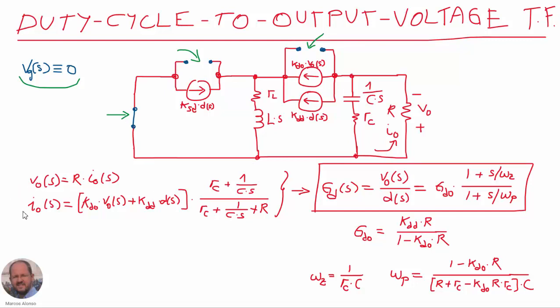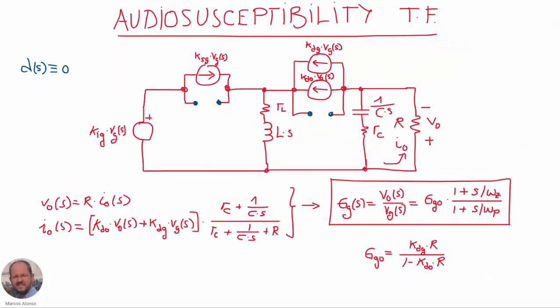The final circuit is straightforward to analyze. We can obtain the output voltage, the output current, and from this the relationship between the output voltage perturbation and the duty cycle perturbation. We obtain this transfer function with a DC value, a zero at frequency omega_z, and a pole at frequency omega_p. These are the different values for the DC gain and for the two frequencies of the zero and the pole. We can see that our power factor correction stage behaves as a first-order circuit.